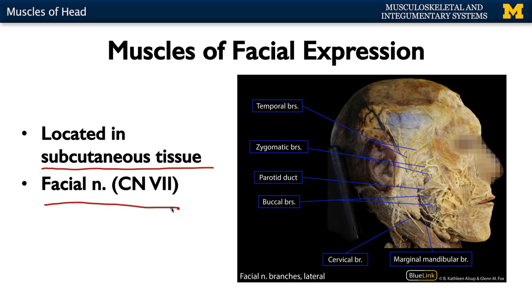In this cadaveric dissection, you can see your parotid gland right next to your ear, and then all of these efferent branches — these are branches of the facial nerve heading to those muscles of facial expression.